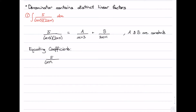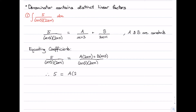We have 5 over (x plus 3)(2x plus 1) equal to a fraction with denominator (x plus 3)(2x plus 1) and numerator a(2x plus 1) plus b(x plus 3). Since the denominators are the same and the fractions are equal, their numerators must be equal. So 5 equals a(2x plus 1) plus b(x plus 3).